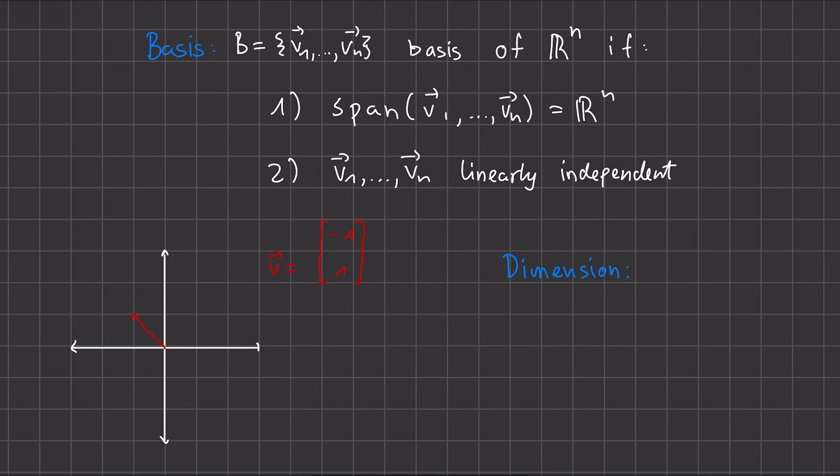This brings us to one last concept called the dimension. And our dimension is just the number of vectors in our basis. So in the case for our R², we know that we need the second vector for it to be a basis. So we had this vector v and u. And since this builds our basis and has two vectors, our dimension would be 2. So for our R², the dimension is 2.